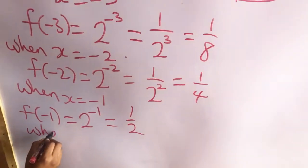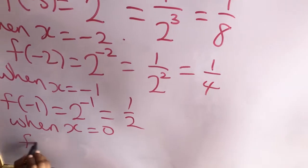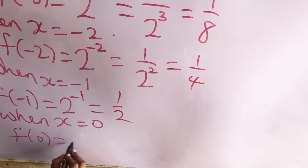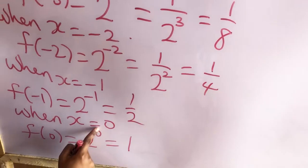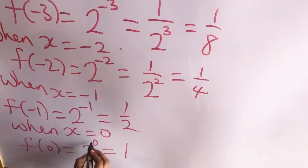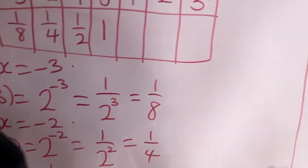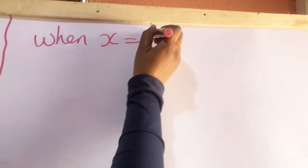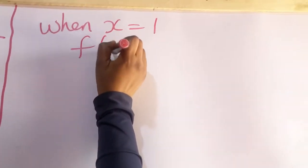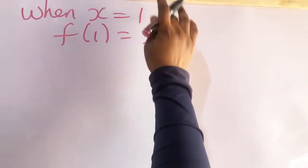When x is equal to 0, f(0) will be equal to 2 raised to the power 0. Remember that any number raised to the power of 0 is equal to 1, so this gives 1. When x is equal to 1, f(1) is equal to 2 raised to the power 1. Any number raised to the power of 1 is that number, so f(1) = 2.